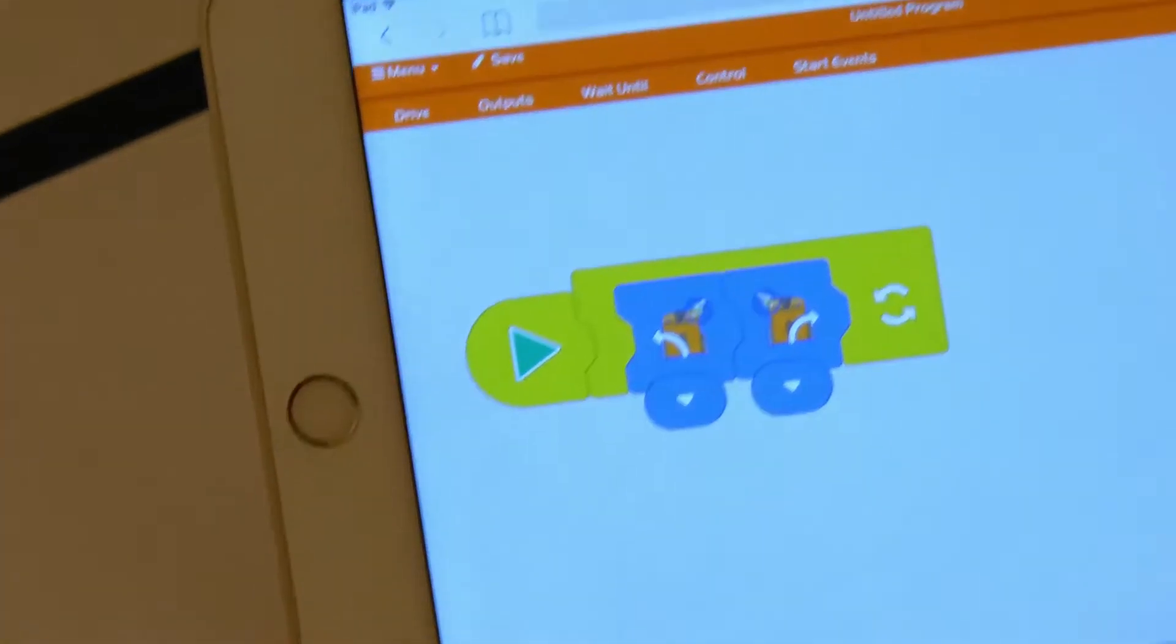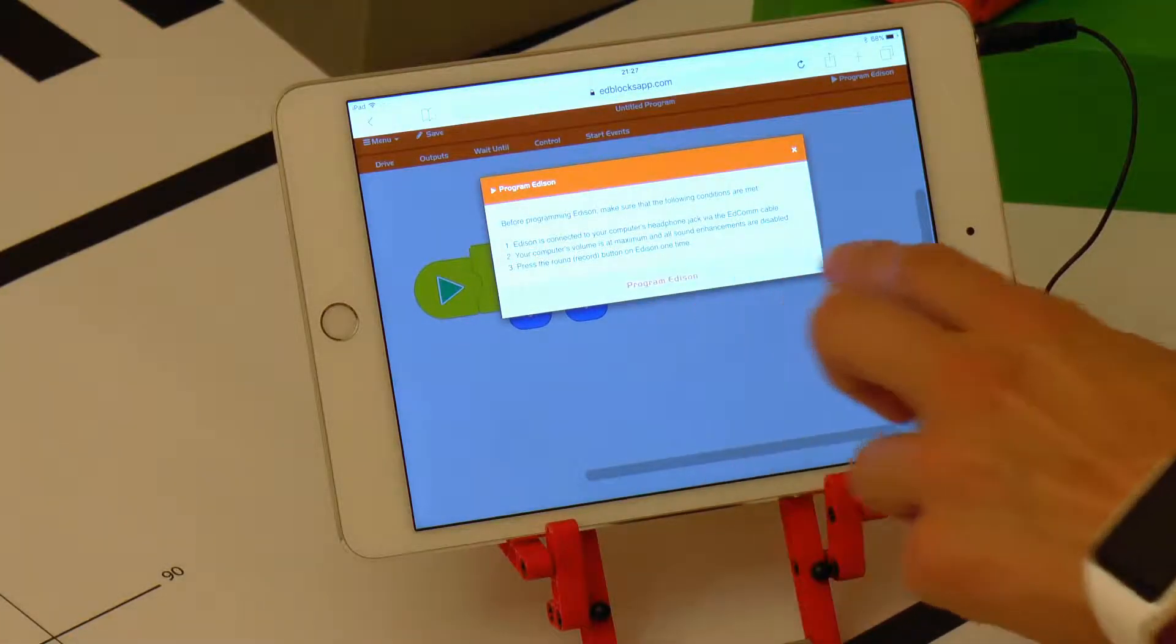To end the program with an endless loop, we need to press Edison's square button. Uploading. Testing.